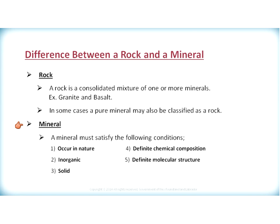When we look at a mineral, a mineral must satisfy the following five conditions: it must be naturally occurring, it must be inorganic, it must be a solid, it must have a definite chemical composition, and a definite molecular structure. So the definition of a mineral is a naturally occurring inorganic solid with a definite chemical composition and definite molecular structure.